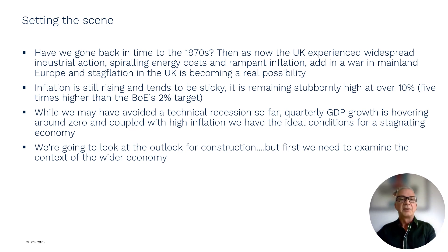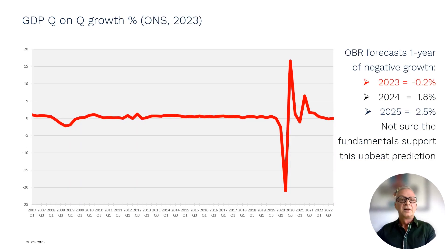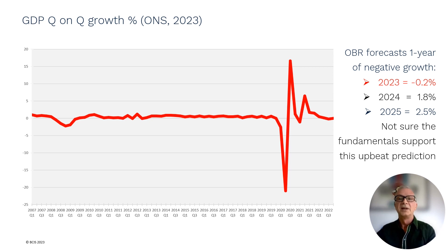We're going to look at the outlook for construction, but first we need to examine the context of the wider economy. Looking at GDP first, it seems to be flatlining with little or no growth and is still below pre-crisis levels. The latest forecast by the OBR suggests only one year of negative GDP growth in 2023, followed by above-trend growth in the next two years. However, looking at the wider economic context, we're not convinced that the fundamentals support this upbeat prediction.